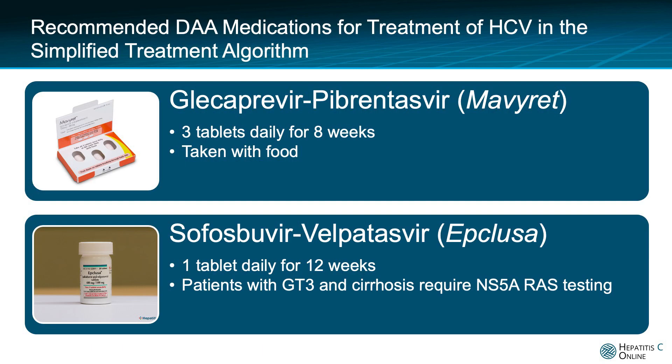There are two equally recommended direct-acting antiviral options for use in simplified treatment of persons with chronic hepatitis C. One, an eight-week treatment course of oral glecaprevir-pibrentasvir, and two, a 12-week treatment course with oral sofosbuvir-velpatasvir. Both of these regimens have pan-genotypic activity, have once-daily dosing, are well-tolerated, and have cure rates greater than 95% with all genotypes.